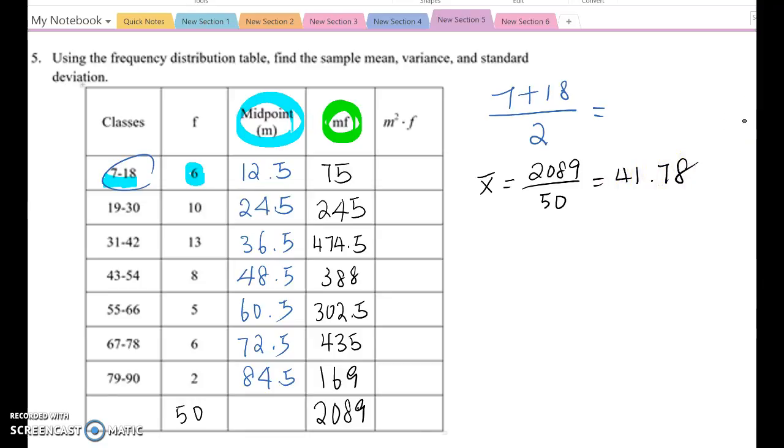Now we need to find the variance and the standard deviation. In order to find that, you need to find M squared times F first, this value. Which means you do midpoint squared times frequency value.